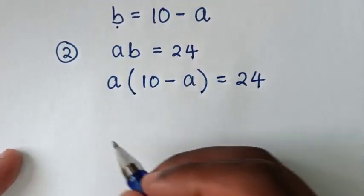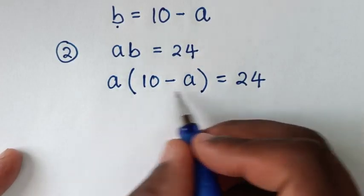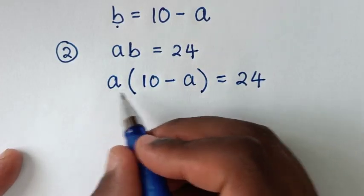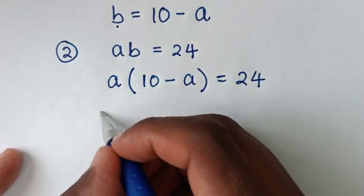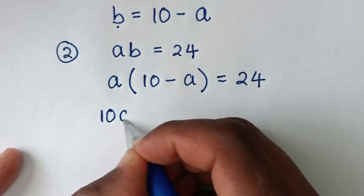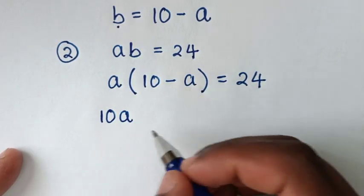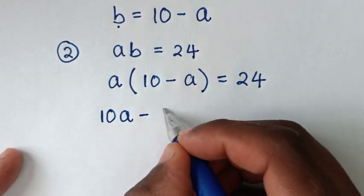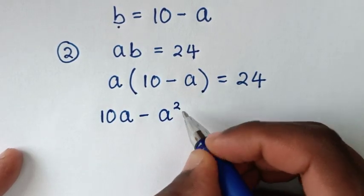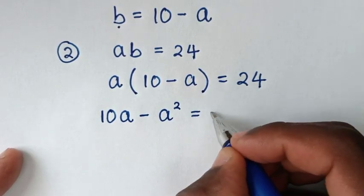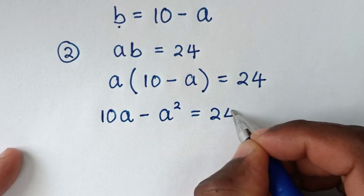Then, in the next step, we'll expand by taking a inside the bracket. So a times 10 gives 10a, and a times negative a gives negative a squared, which is equal to 24.